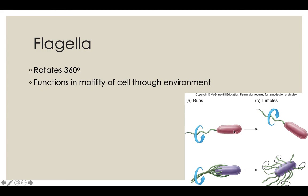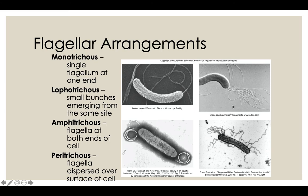Monotrichous organisms run and tumble with one flagella. Peritrichous organisms have all their flagella come together as one giant super flagella. Amphitrichous organisms have flagella that all twist together on one side while the others trail behind like hair blowing in the wind. Lophotrichous organisms twist together into one super flagella on that one end.